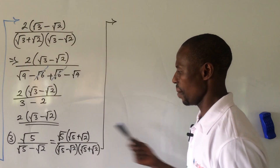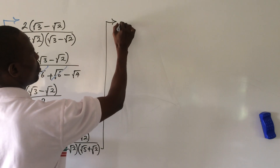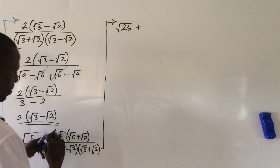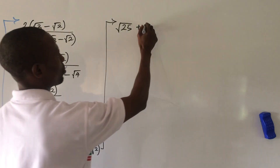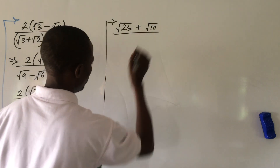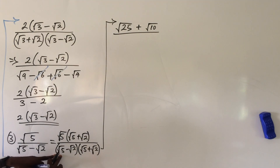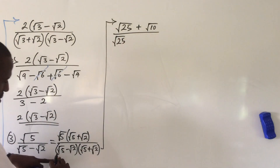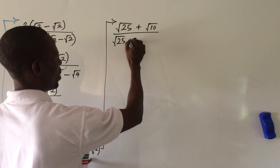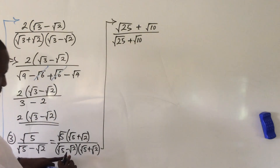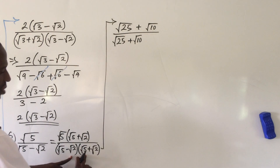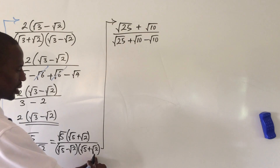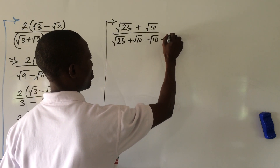Opening up the numerator: root five times root five gives us root 25, and root five times root two gives us root ten. For the denominator, we expand: root five times root five gives root 25, then plus root five times root two gives plus root ten, then minus root two times root five gives minus root ten, and minus root two times root two gives minus root four.